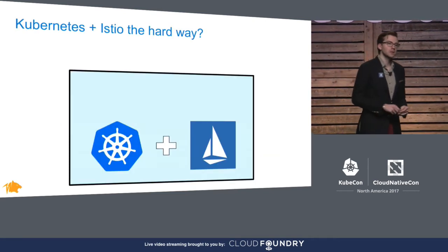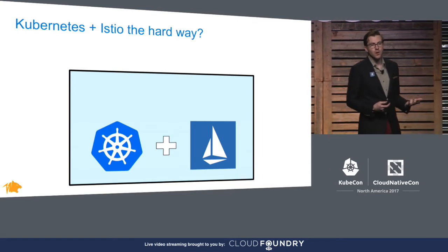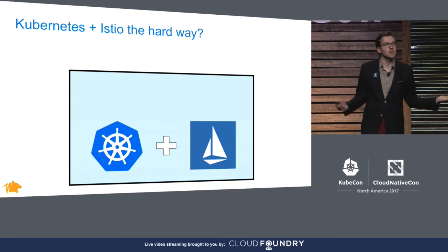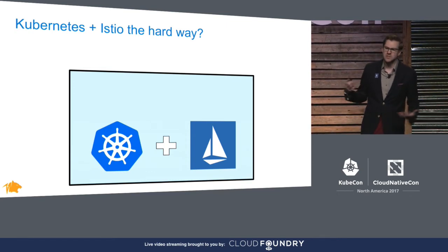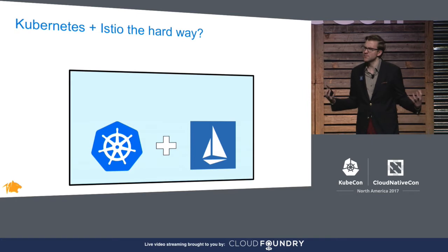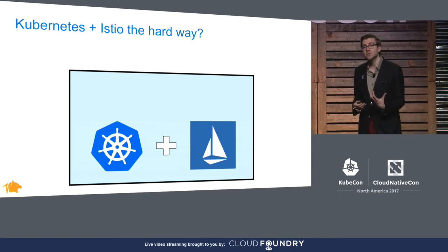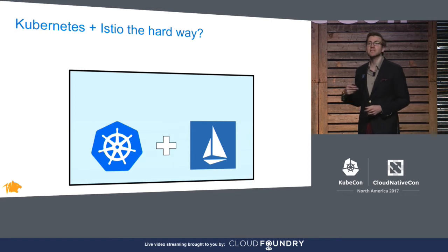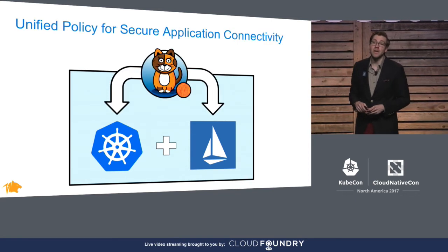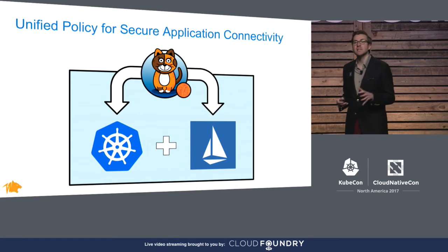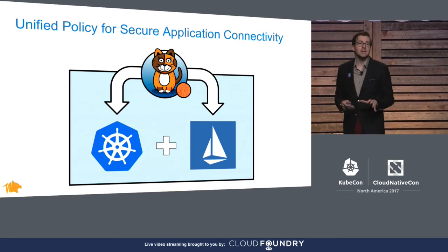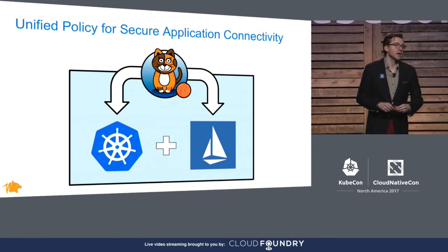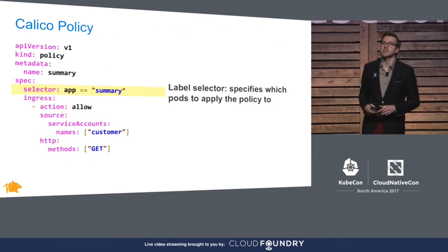So we have these great building blocks, but how do you deploy them together? Today you would configure network policy, and then configure Istio with any application layer rules. But there's a gap because it's really painful to keep things in sync, and you might leave the door ajar for attackers or cause production outages. So today we're announcing Calico support for application layer policy — seamlessly combining Kubernetes network policy and Istio security features into a unified policy for secure application connectivity. Let's take a look at an example.